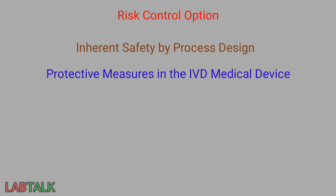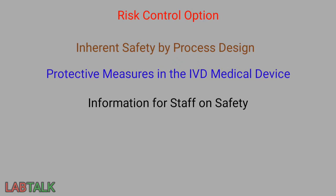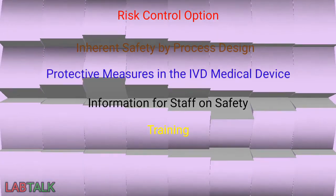The next risk control measure is information for staff on safety. Staff must be given information about the safety of the risk processes, which includes warnings, precautions, and advisory notices for healthcare providers. Finally, in the risk control options is training — training can be provided to the laboratory staff on risk control measures and the use of various processes for controlling the risk.